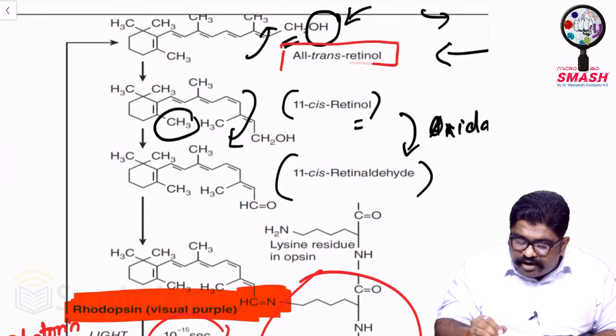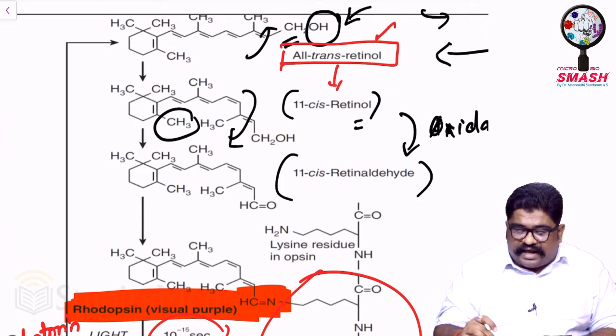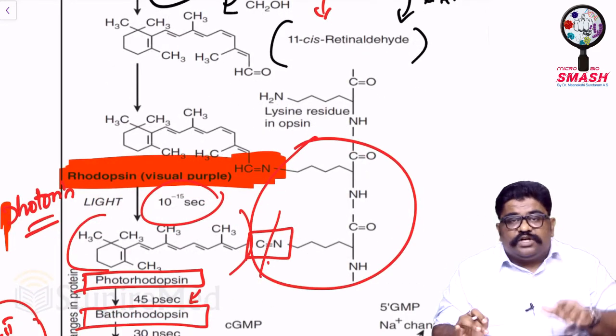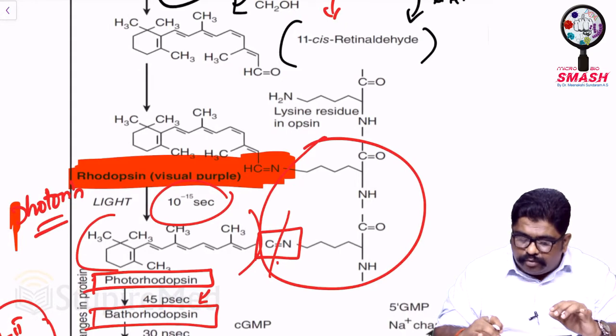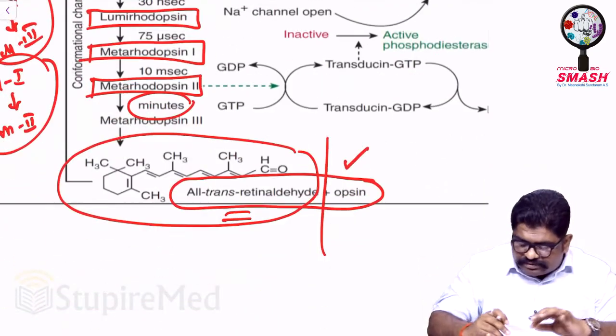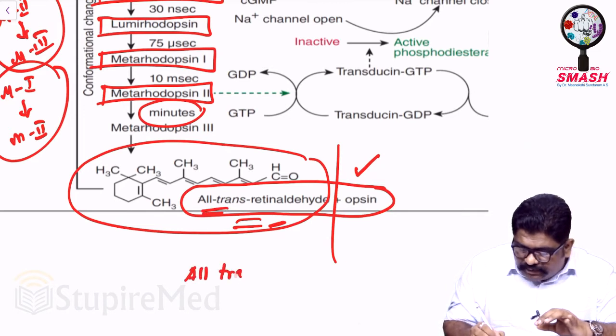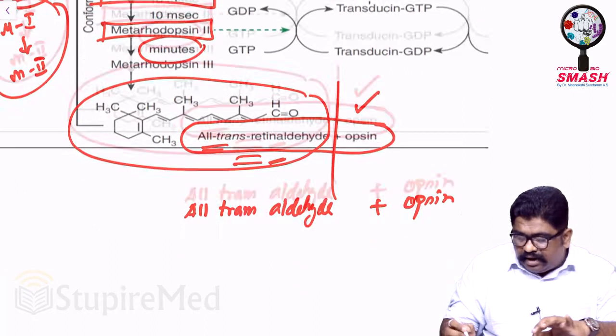First we had all-trans retinol, this was an alcohol that became a cis alcohol, that became an 11-cis aldehyde. So in the option, what is the integrated part of vitamin A? It is an 11-cis aldehyde. But when you broke it, ultimately over a series of steps, what you get is again an aldehyde, but it is all-trans.